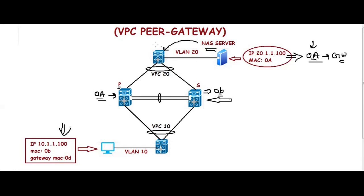So if any frame or communication is happening to a different network, the NAS device uses 0A as the default gateway MAC. If the NAS server communicates to a PC and the traffic goes through switch one, based on the hash the switch sends traffic to the secondary device. The secondary device finds MAC address 0A learned over the peer link, sends the frame over the peer link to the primary device, but due to the loop avoidance mechanism, traffic is black-holed — the primary device cannot send it back out to a VPC member port.